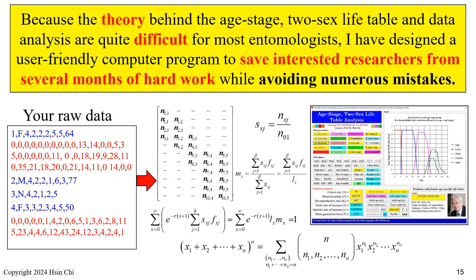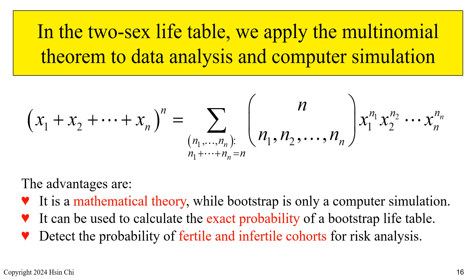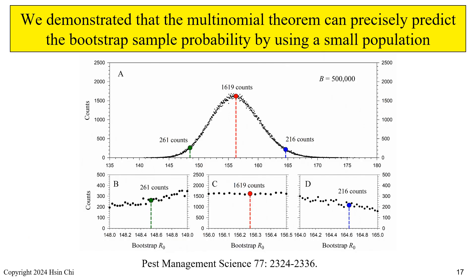Because the theory behind the age-stage two-sex life table and data analysis are quite difficult for most entomologists, I have designed a user-friendly computer program to save interested researchers from several months of hard work while avoiding numerous mistakes. In the two-sex life table, we apply the multinomial theorem to data analysis and computer simulation. The advantages are: it is a mathematical theory, while bootstrap is only a computer simulation. It can be used to calculate the exact probability of a bootstrap life table and detect the probability of fertile and infertile cohorts for risk analysis. We demonstrated that the multinomial theorem can precisely predict the bootstrap sample probability using a small population.